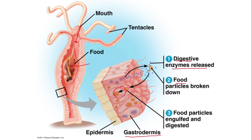After being engulfed by the gastrodermis cells, digestion is completed intracellularly by the help of digestive vacuoles. After digestion, the indigestible food is expelled out from the gastrovascular cavity through the single opening — the mouth.